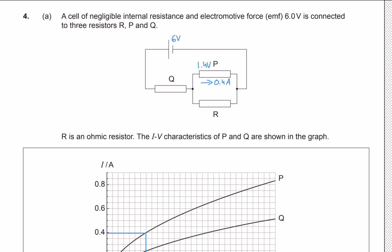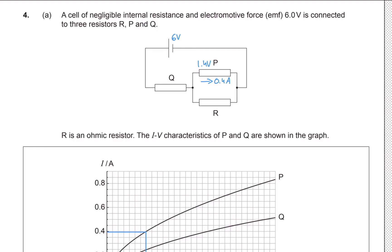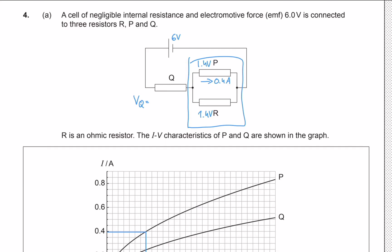Since P and R are in a parallel connection, the voltage across both branches is the same — that's a property of parallel connections. So the voltage across R is also 1.4 volts. Since the entire circuit has 6 volts, the potential difference across Q is the remaining voltage: 6 minus 1.4, which is 4.6 volts.